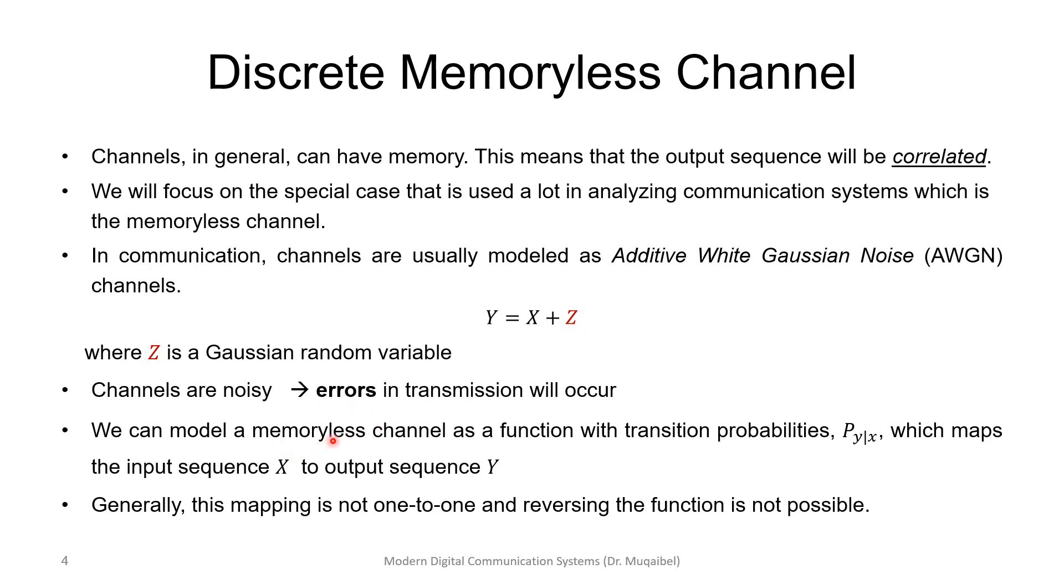If the channel is noisy, errors in transmission will occur. We can model a memoryless channel as a function of transition probabilities. What is the probability that we start with X and end with Y, specific X and end with Y? These are called transition probabilities. They map X into a certain output Y. In general, this mapping is not one-to-one, and if it's not one-to-one, then the reverse function is not possible.